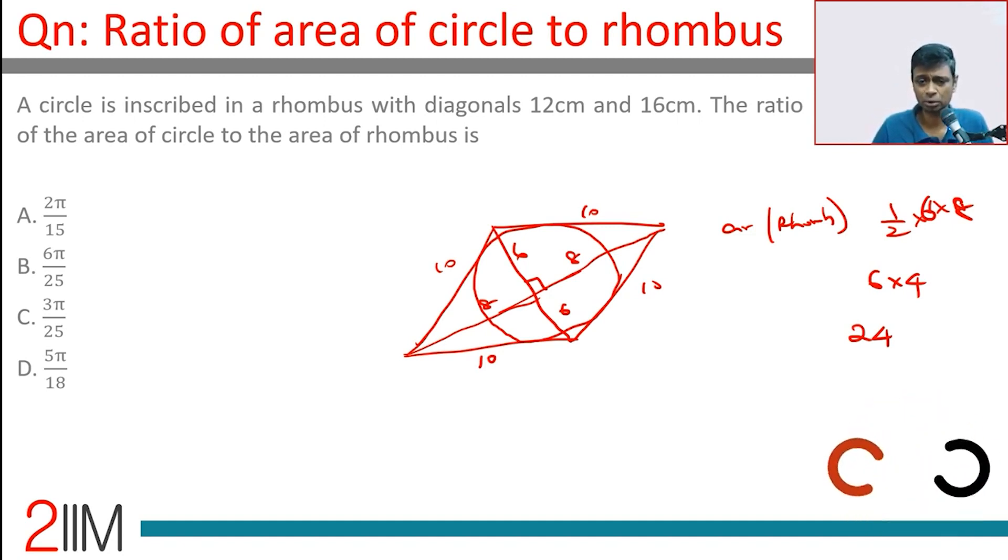How do we find that? I spent a long time thinking about this. Radius will be perpendicular to the side of the rhombus. Why? Because tangent is perpendicular to radius, and the side of the rhombus is the tangent to the circle.